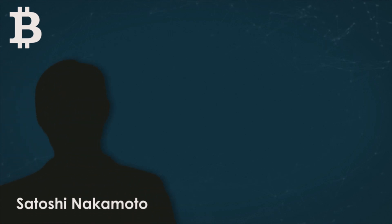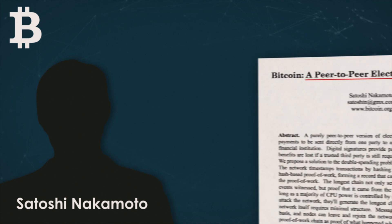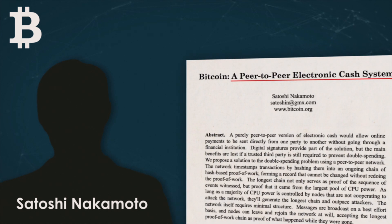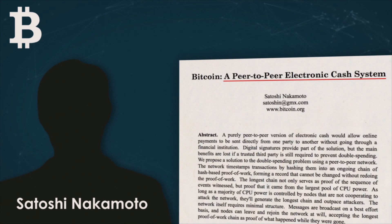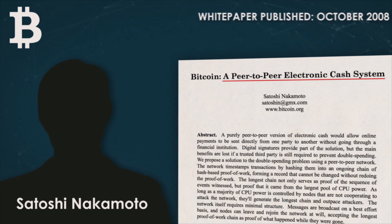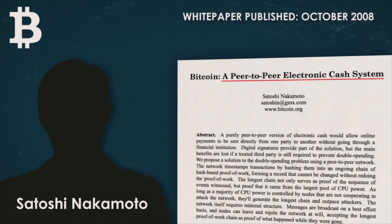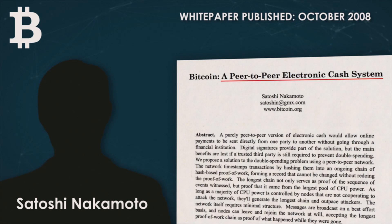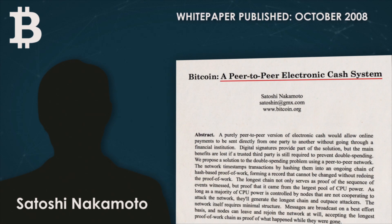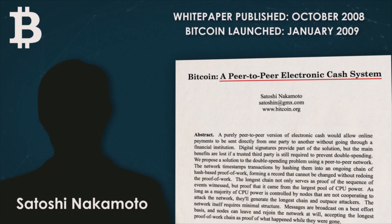The creator of Bitcoin, a collective or individual known under the pseudonym Satoshi Nakamoto, published a description of the protocol back in October 2008. The network itself was launched in January 2009.